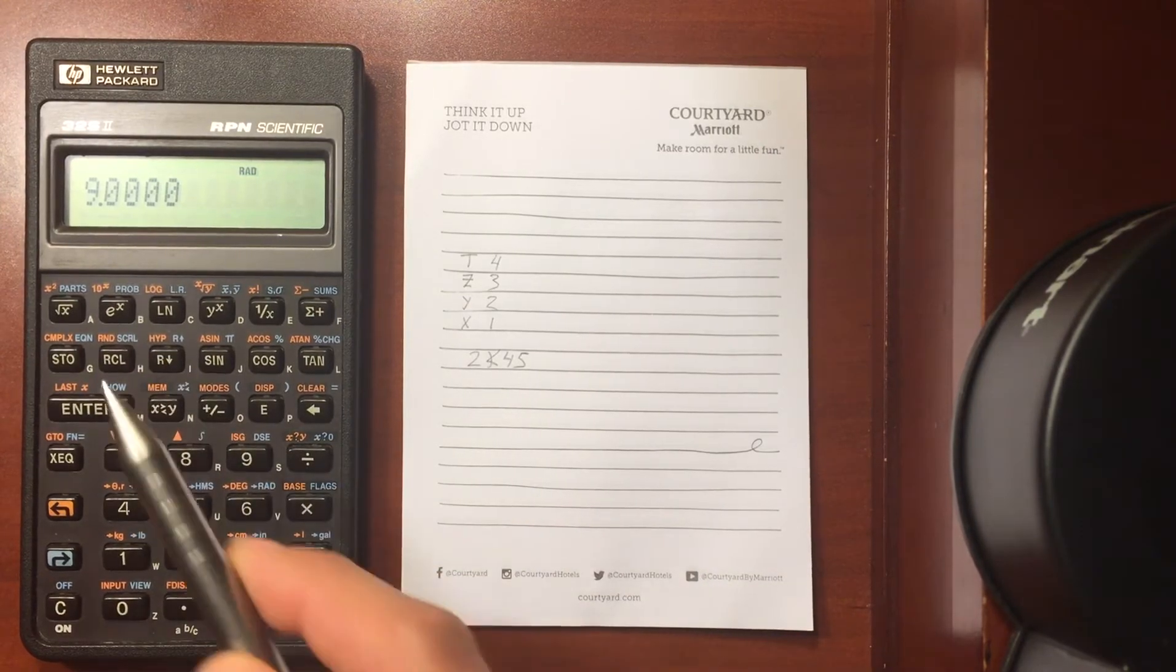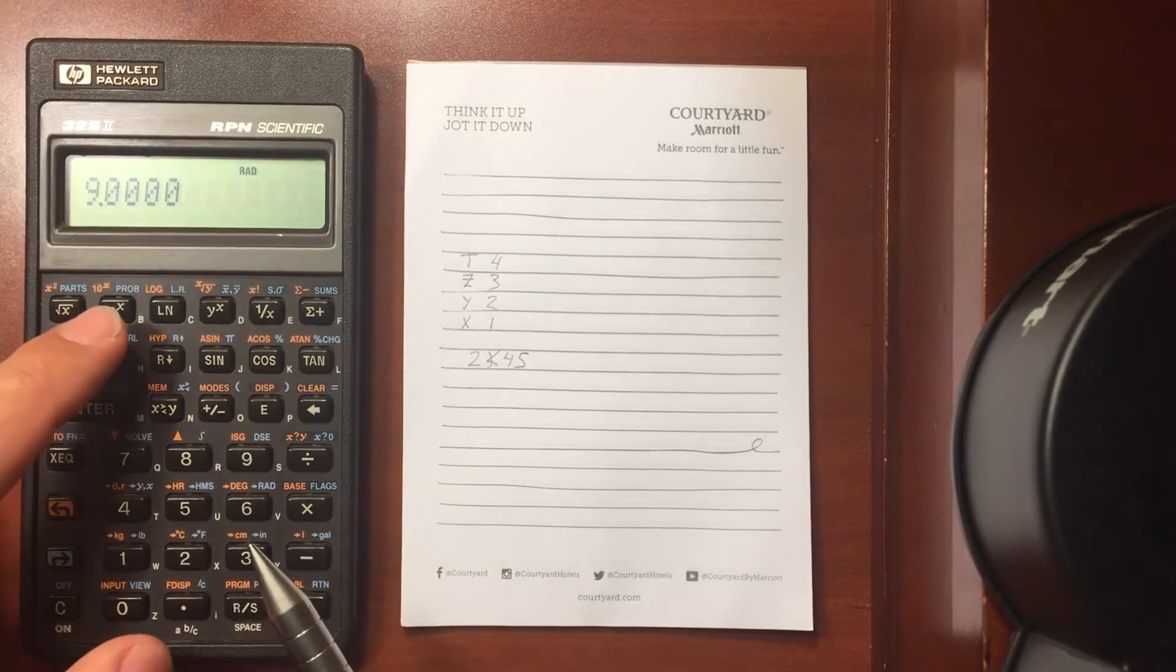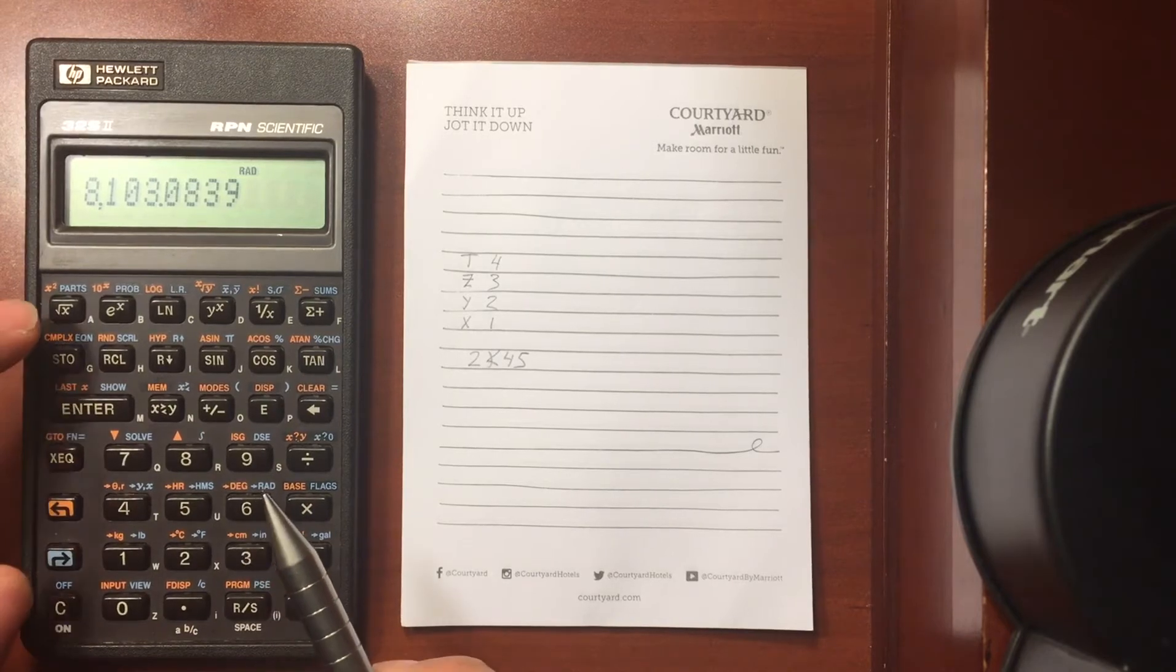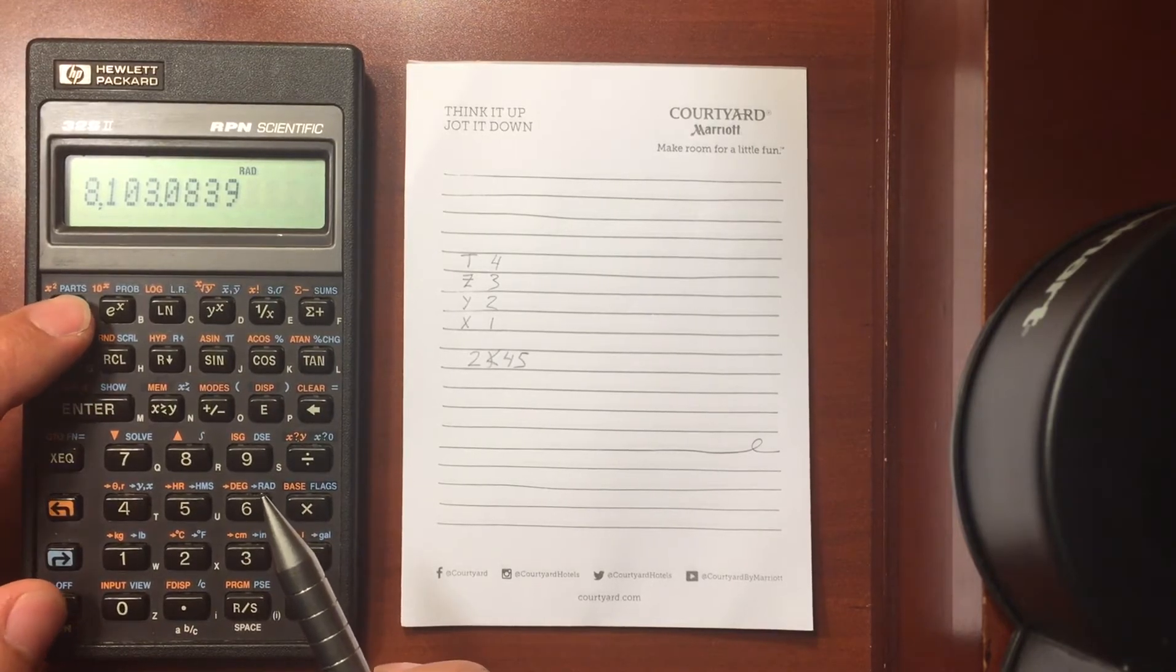E to the X, that'll take the natural number E to the exponent that you saw there, 9. Square root of X, that takes the square root of what's in the X register.